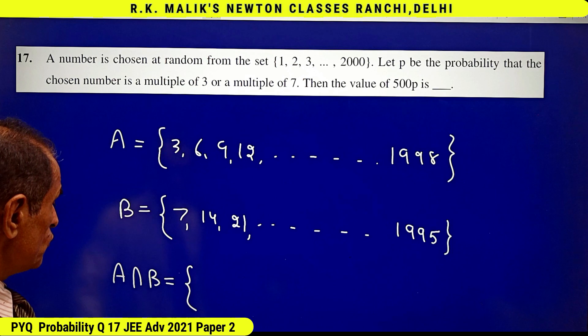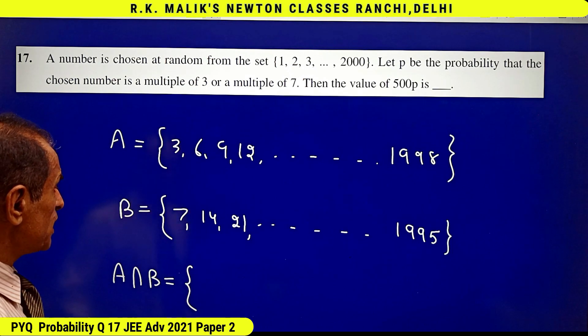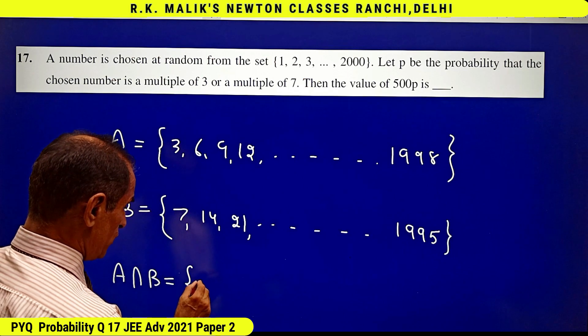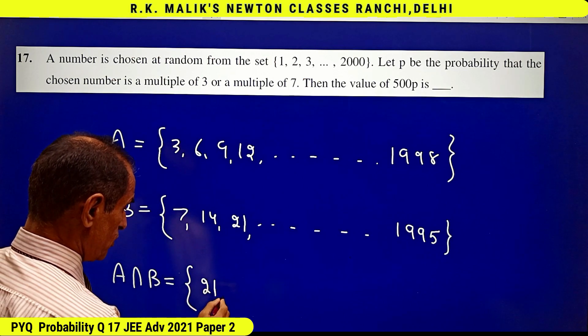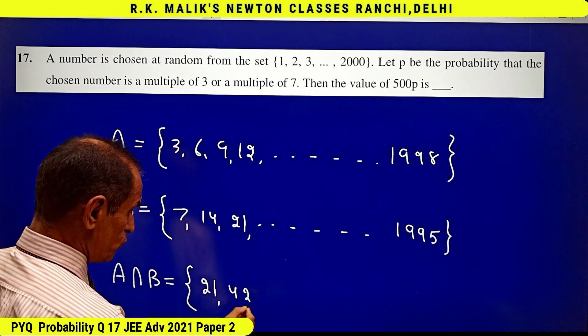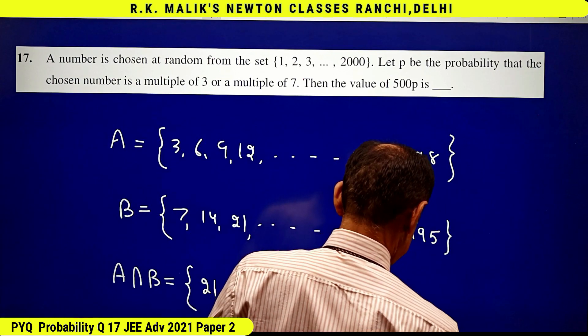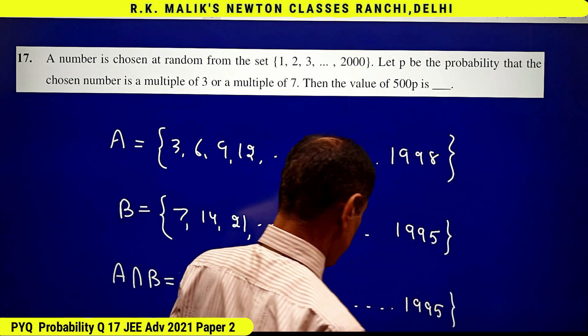...will contain those numbers which are both multiples of 3 and 7. That is which are multiples of 21: 21, 42, 63 and the last is 1995.